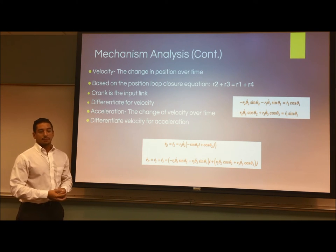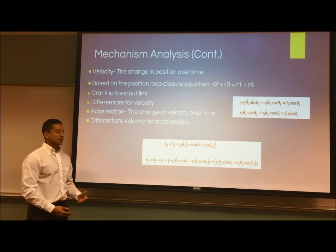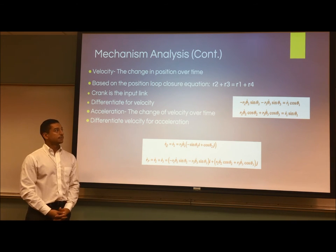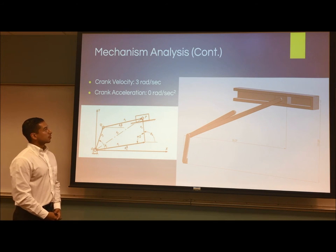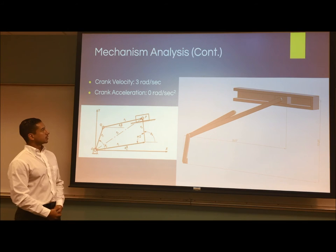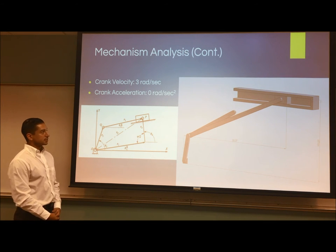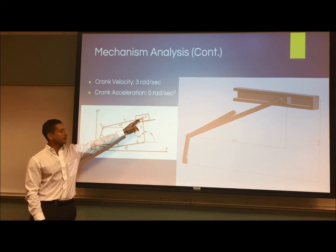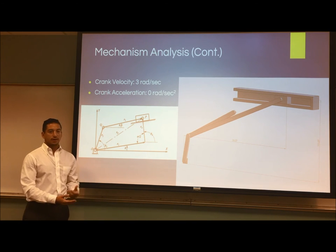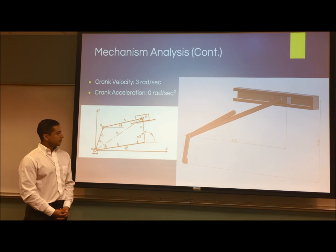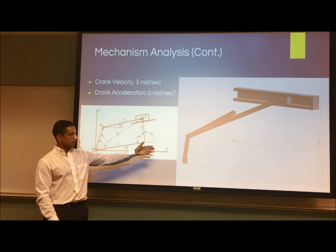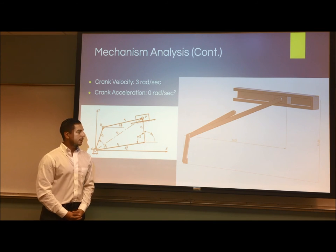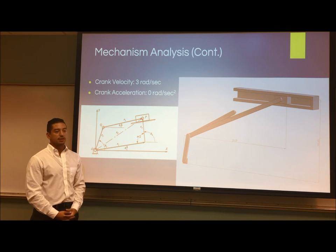The same approach is used for acceleration — as acceleration is the change of velocity over time, we differentiate the equations one more time. For our project, the crank velocity of R2 is three radians per second, and the angular acceleration was zero radians per second squared. Using vector addition, the two vectors add up to find the unknowns. This is the design of our project in SolidWorks, which includes the coupler whose motion Noel showed in an earlier slide.